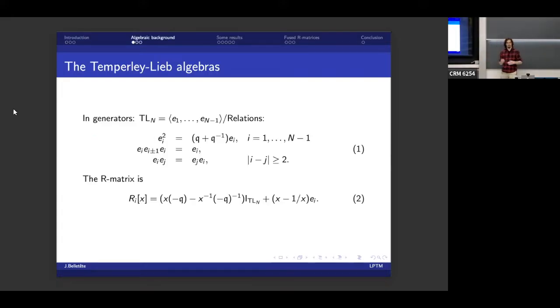It's going to make more sense later on. So now in order to put more words into this, some algebraic background. These are the Temperley-Lieb algebras, we've heard about it a few minutes ago. So this is the simple definition, it's a finite dimensional associative algebra. It has generators E_1 through E_{N-1}, quotiented out by these three relations.